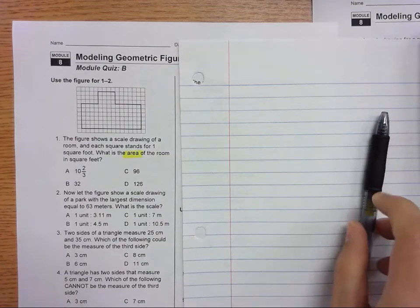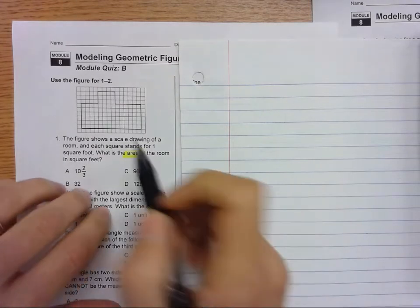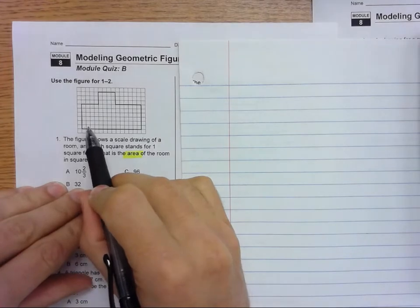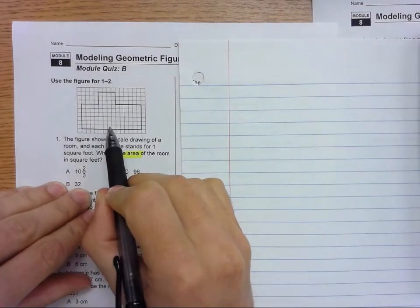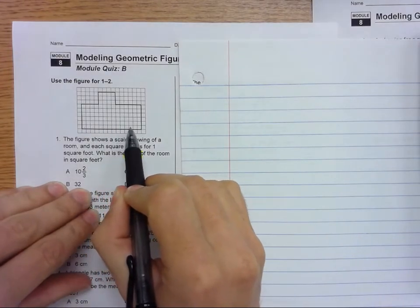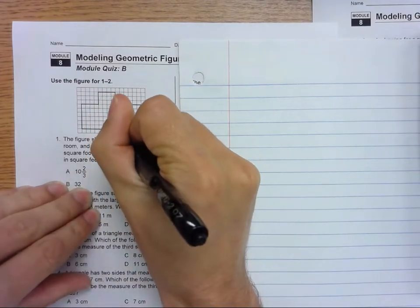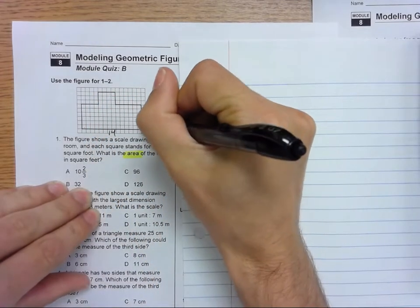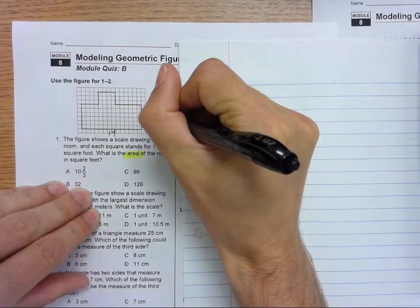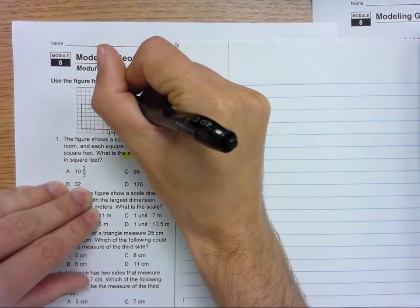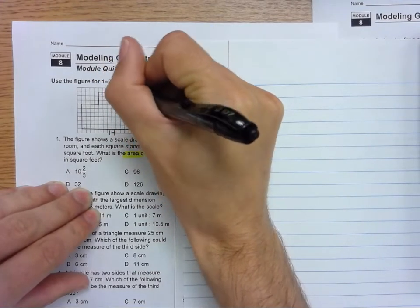We just need to find some of the dimensions here. So how far across does this go? 1, 2, 3, 4, 5, 6, 7, 8, 9, 10, 11, 12, 13, 14. So this is 14 across. How far up? 1, 2, 3, 4, 5, 6. Six up.